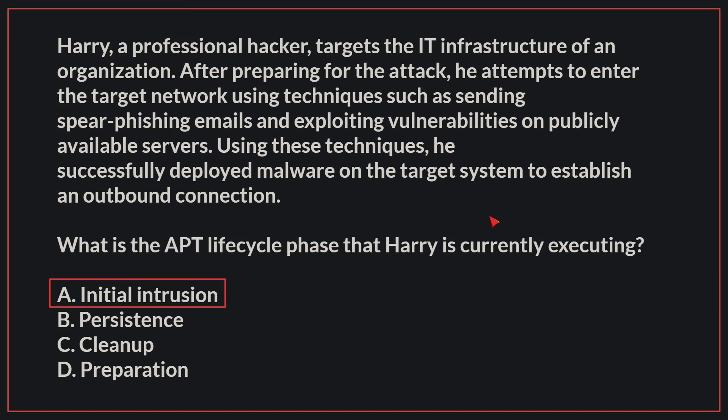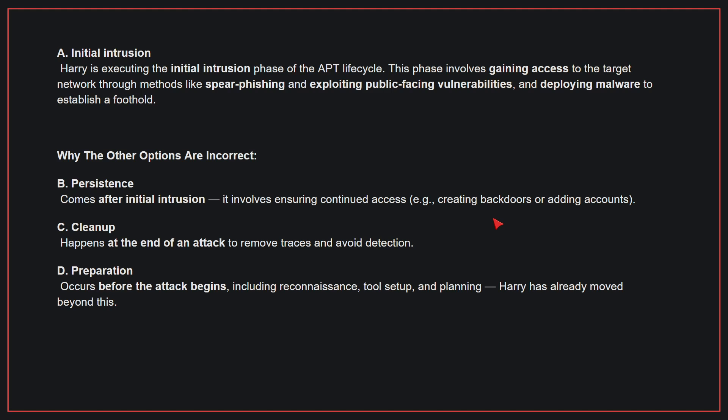The correct answer is A. Initial intrusion. Harry is executing the initial intrusion phase of the APT lifecycle. This phase involves gaining access to the target network through methods like spear phishing and exploiting public-facing vulnerabilities, and deploying malware to establish a foothold. Why the other options are incorrect? B. Persistence — this comes after initial intrusion and involves ensuring continued access. C. Cleanup — this happens at the end of an attack to remove traces and avoid detection. D. Preparation — this occurs before the attack begins, including reconnaissance, tool setup, and planning. Harry has already moved beyond this. Therefore, the correct answer is A.